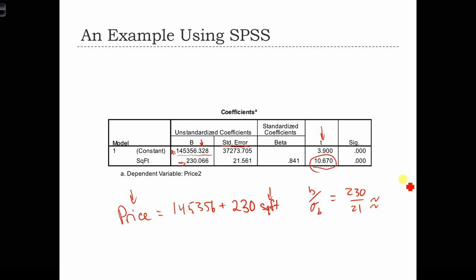Which is roughly, well, I dropped some significant digits there, and that's equal to 10.67. So the t-statistic is 10.67, which is a very significant statistic.